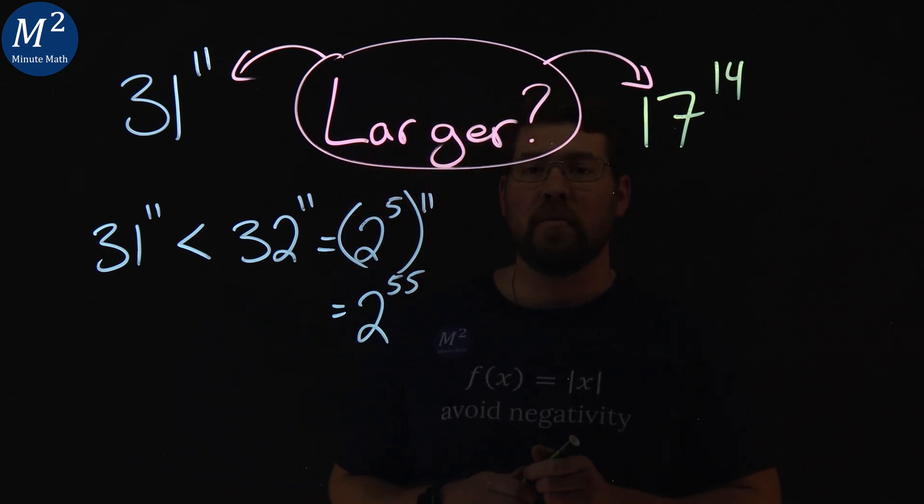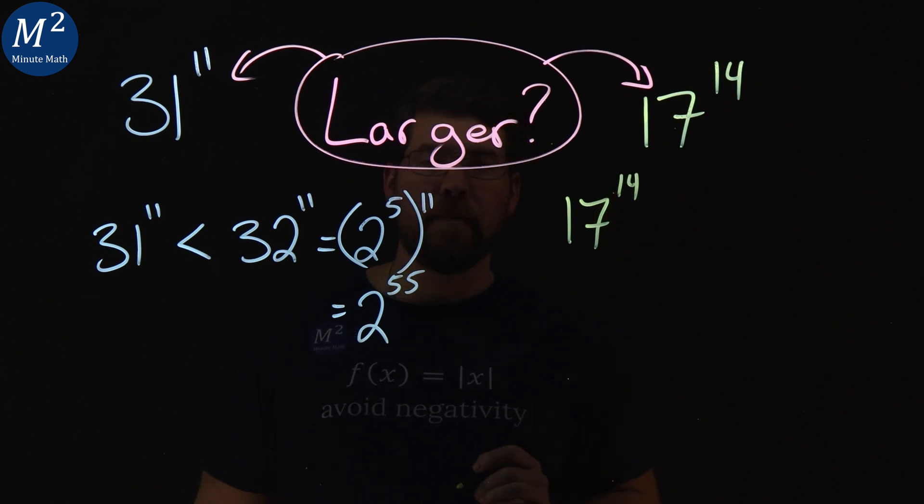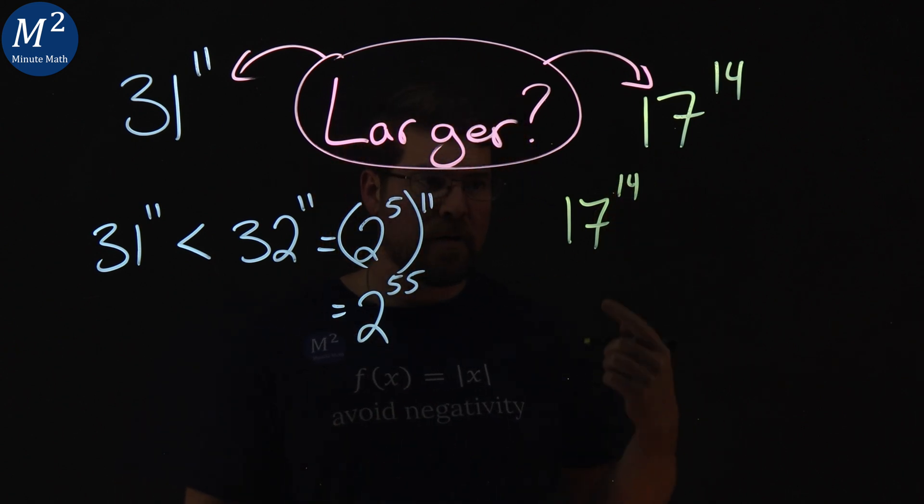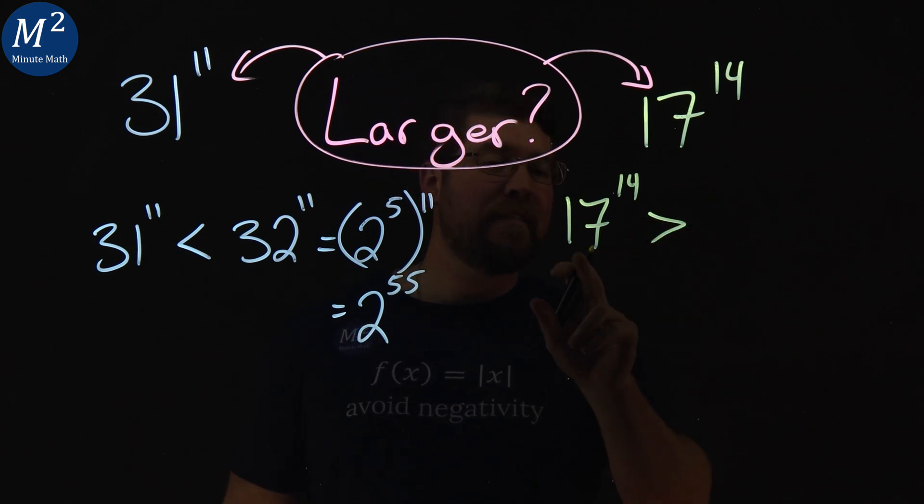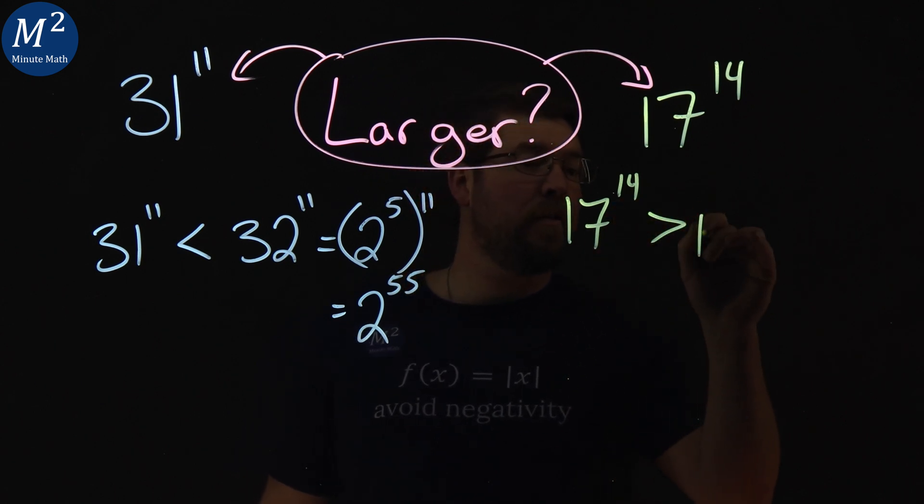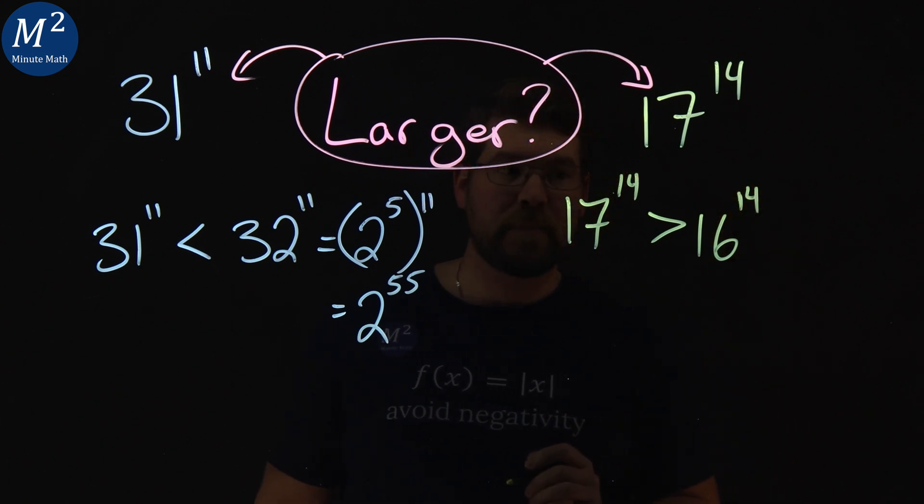So now let's apply the same thing to the 17. We have 17 to the 14th power. Let's bring that down a little bit to the 16th, or 16 to the 14th power. So 17 to the 14th power is greater than 16 to the 14th power.